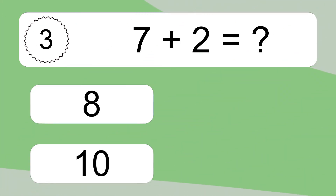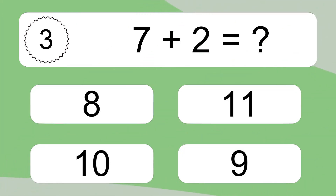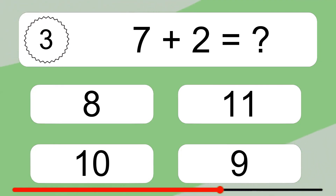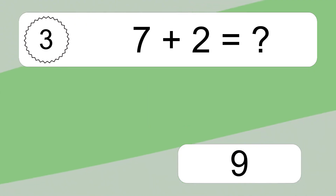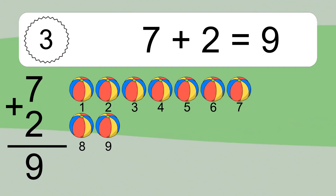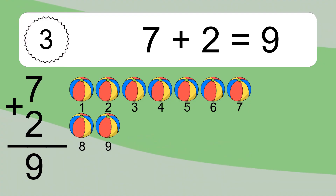7 plus 2 equals what? 7 plus 2 equals 9. Let's count it: 1, 2, 3, 4, 5, 6, 7, 8, 9.